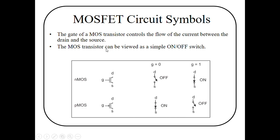The gate of a MOS transistor controls the flow of current between drain and source. The MOS transistor can be viewed as a simple ON-OFF switch. When we apply low gate voltage on an N-MOS transistor, it will turn OFF; when we apply high gate voltage, it will turn ON. Similarly, for a P-MOS transistor, when we apply low gate voltage it will turn ON, and when we apply high gate voltage it will turn OFF.